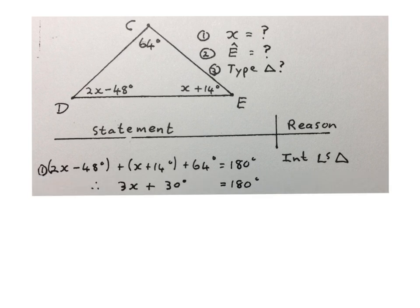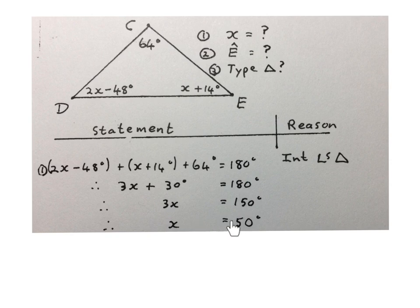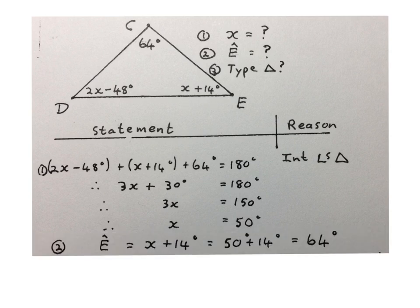Now we solve for X using normal equations. 2X plus X is 3X, and combining constants: minus 48 plus 14 plus 64 degrees gives 30 degrees, so 3X plus 30 equals 180. Subtracting 30 from both sides: 3X equals 150. Dividing by 3: X equals 50 degrees. Next, they ask for the size of angle E. Angle E is X plus 14 degrees. Substituting X equals 50: angle E equals 64 degrees.